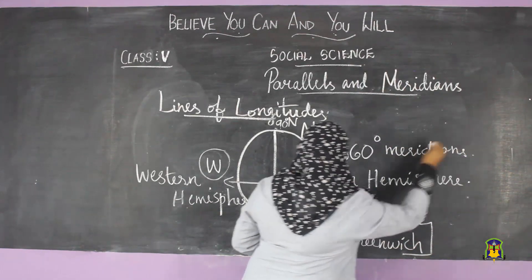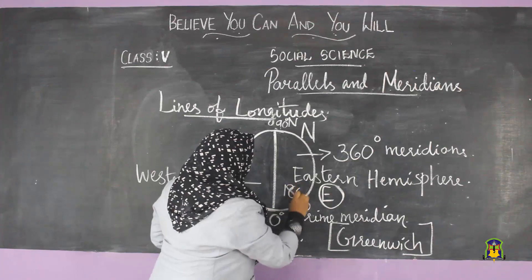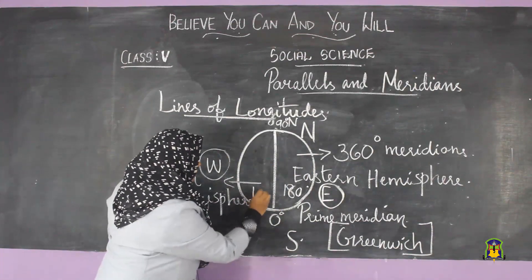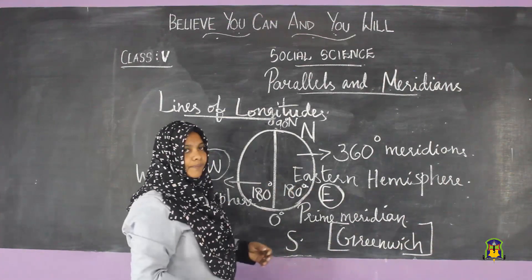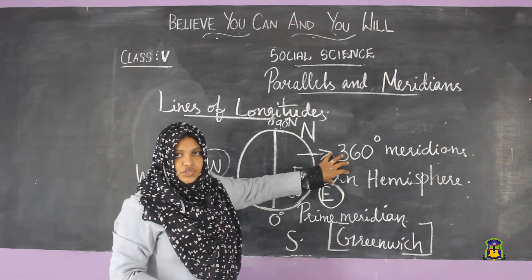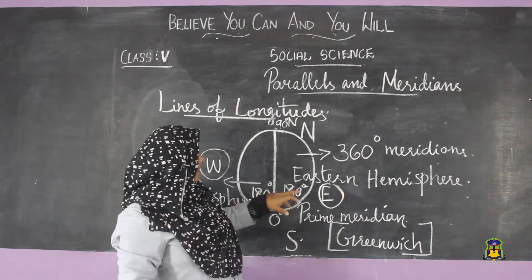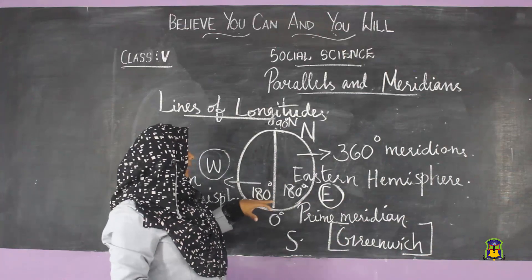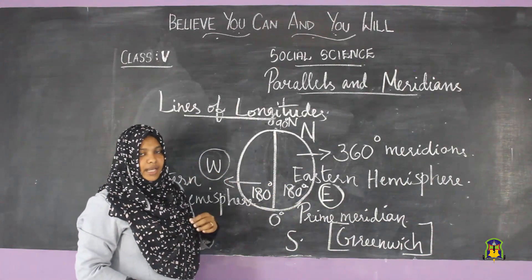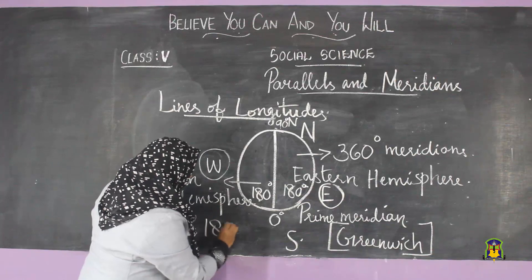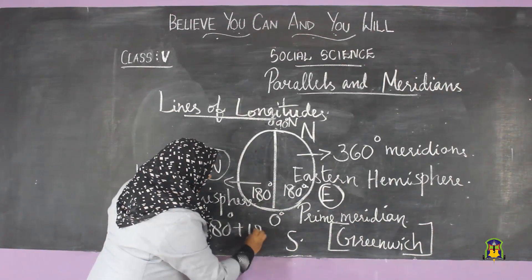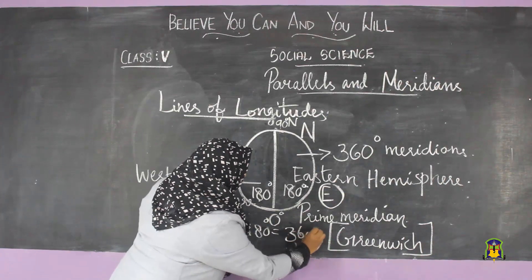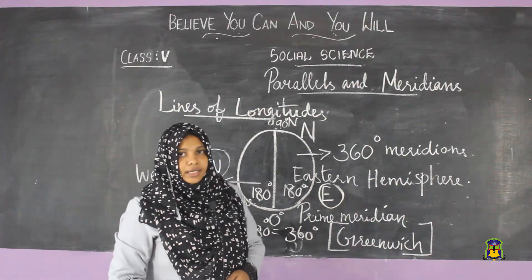There are 180 degrees in the eastern hemisphere and 180 degrees in the western hemisphere, making a total of 360 meridians: 180 degrees east plus 180 degrees west equals 360 degrees.